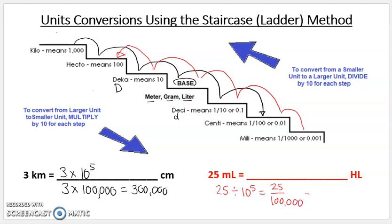Or in decimal terms, that would be zero point—move it over one, two, three, four, five. So zero, zero, zero, two, five. So 25 milliliters is 0.00025 hectoliters.